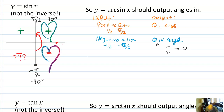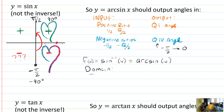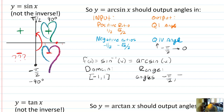So to be more official: for the function f of x equals sine inverse of x, also written as arcsine of x, the domain is numbers from negative one to one — those are the side length ratios, opposite over hypotenuse. And the range is angles from negative pi over two up to pi over two. If you're doing arcsine of something, you will only ever give angle answers in that range.